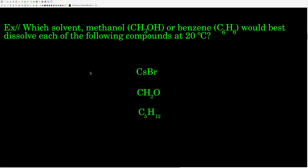Let's do a little example. We want to figure out, for each of these compounds — cesium bromide, formaldehyde, and N-pentane — which solvent would be best: methanol or benzene? For cesium bromide, which solvent would be best, methanol or benzene? Same for formaldehyde and for N-pentane. Why don't you guys figure this out real quick, and when you get an answer, come on back.